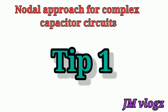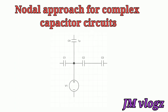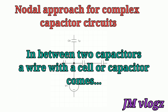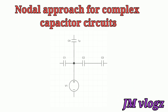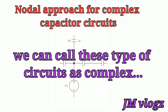Tip number one — this answers your first question: how can you identify a capacitive circuit as complex? Consider a circuit having capacitors C1, C2 and C3. In between two capacitors there is a wire connected to a capacitor and a cell. If in between two capacitors there is a cell or another capacitor, then we say it is not a 100% series circuit — it is a complex circuit.